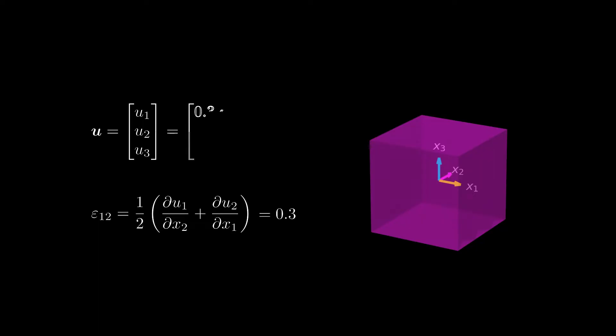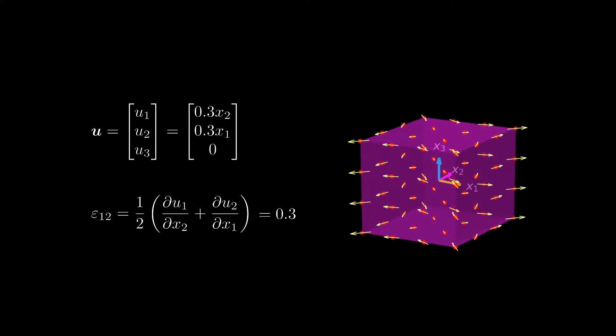Ok, here is a displacement field that leads to epsilon 12 being constant. We observe that the element stretches in the direction that is oriented with a 45 degree angle between x1 and x2 and it squeezes in the direction that is oriented with a 45 degree angle between x1 and x2.